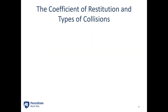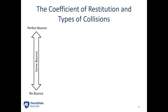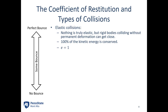With this coefficient of restitution, we can talk about the types of collisions. Everything from a perfect bounce, where you get all of your velocity right back out of the impact, to something where there's no bounce at all and it just hits the surface and stops. Most things are somewhere in the middle. That perfect bounce is known as an elastic collision. Nothing is truly elastic, but rigid bodies colliding without any permanent deformation can get close — billiard balls are a good example. An elastic collision has 100% of kinetic energy conserved, and the coefficient of restitution is equal to one.